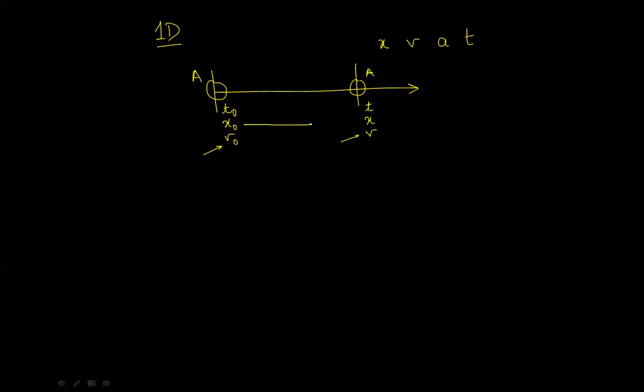You notice here that the distance traveled by this object is basically the distance between those two points. Let's call that S. S is equal to X minus X0. If we suppose that our X0 is actually at 0, then this will simply become X minus 0, or X. I'll come back to this.